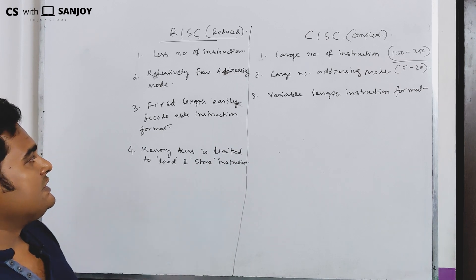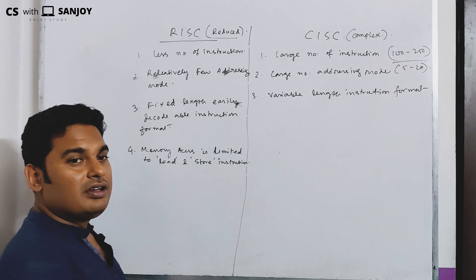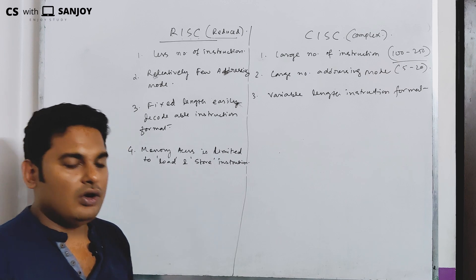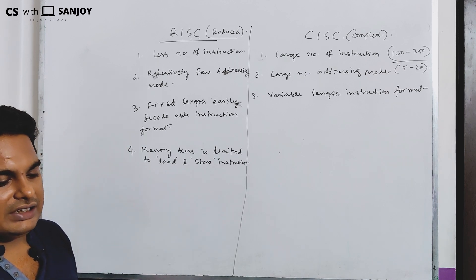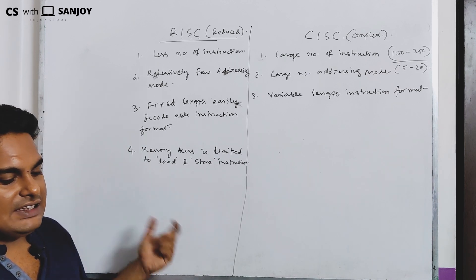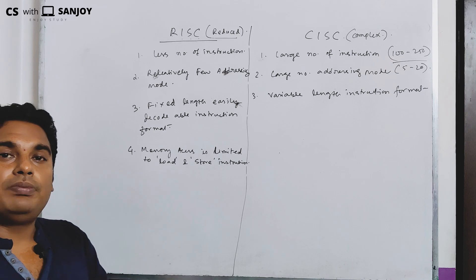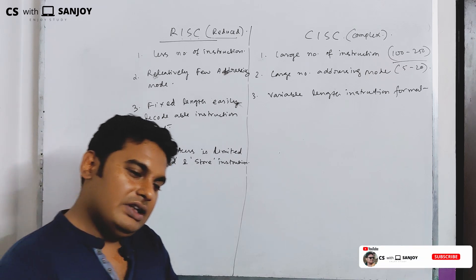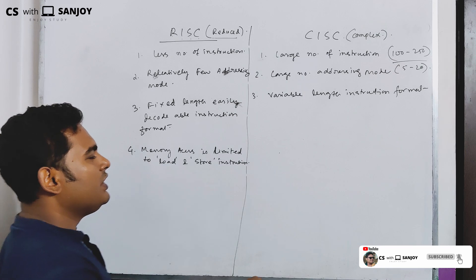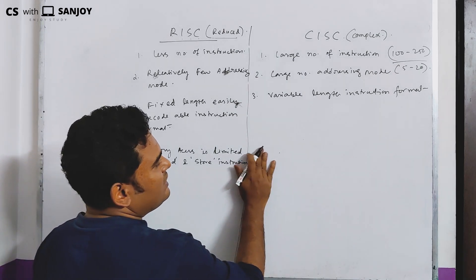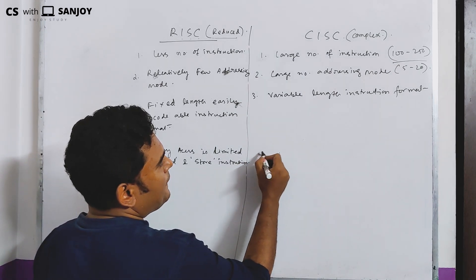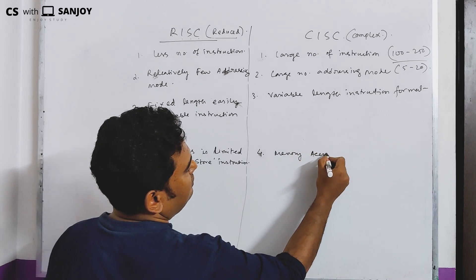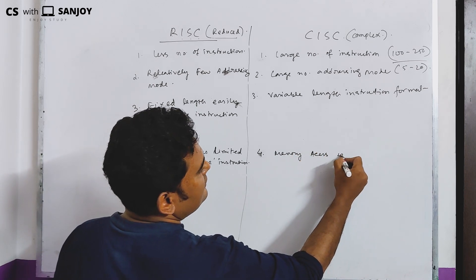But in CISC architecture, it depends on memory access. Basically, the instruction manipulates the operand in memory — memory access is frequent.